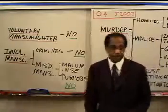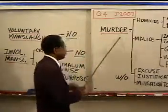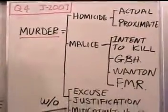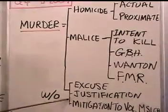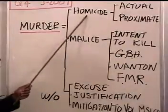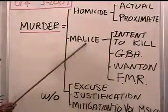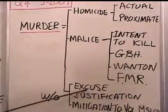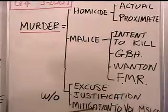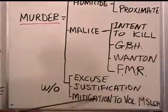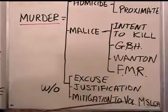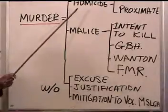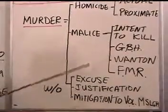Let's start with murder. Murder is defined as homicide with malice, without excuse, justification, or mitigation. The homicide part is the actus reus — what you have to do. The malice part is the mens rea of murder. Excuse and justification are total defenses, and mitigation is a partial defense, because you would mitigate what would have been common law murder down to voluntary manslaughter. So murder is the actus reus with the mens rea, without the defenses.